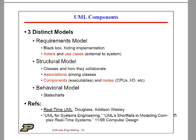Associations are the relationships among classes. There are also components, which are basically the executable elements, as well as nodes — things like CPUs and I/O. State charts are part of the behavioral models, and state charts have become one of the most popular tools within the UML community.